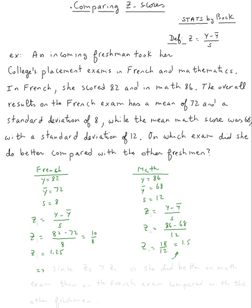So the answer will be, well, let's call this z1, and let's call this z2. So I'll put, since z2 bigger than z1, then she did better on math exam than on the French exam.